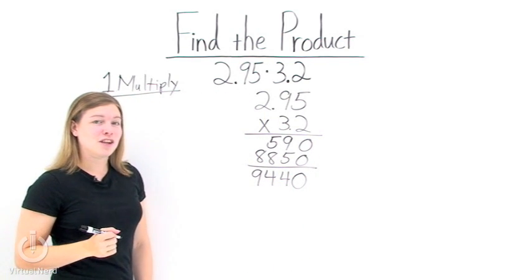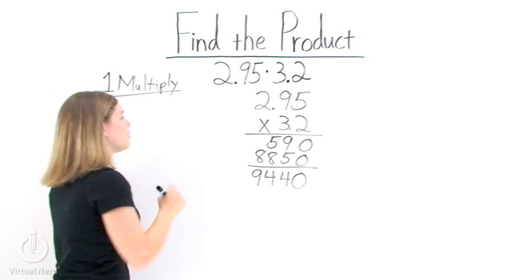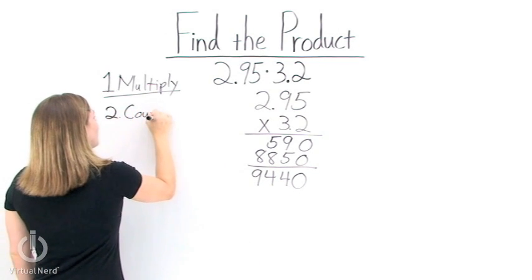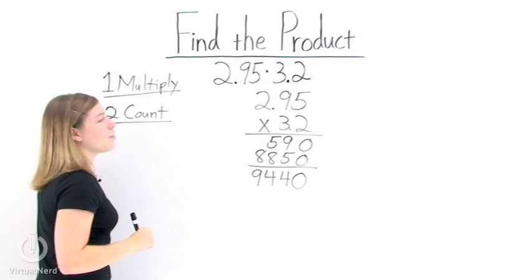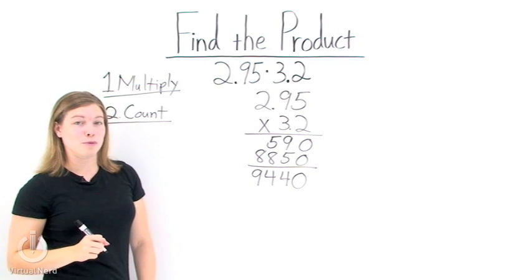Now what we need to do is find where the decimal point goes in our answer. To do this, count the number of decimals that are in each of the original numbers we were multiplying together.